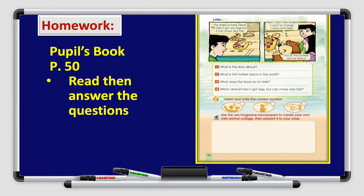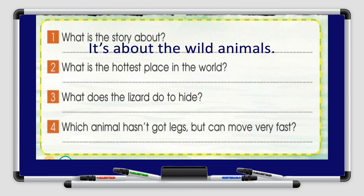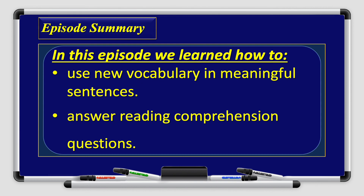Alright boys and girls, we are done with the reading comprehension and the questions. You have a homework — go to your pupils book page 50, read, then answer the questions. I will do the first one with you: Number 1 — what is the story about? It's about wild animals. Read the story carefully and answer the rest of the questions. We've reached the end of this episode. In this episode we learned how to use new vocabulary in meaningful sentences and how to answer reading comprehension questions. Thank you so much for watching, I hope to see you on the next episode. Goodbye for now.